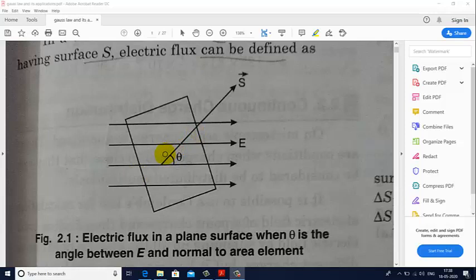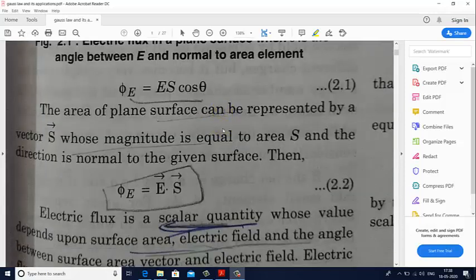The direction of this area will be perpendicular to the surface. So this line denotes the direction of vector S, and there is an angle theta between E and S. So this angle theta here is the angle between E and S. So this is the formula for electric flux.